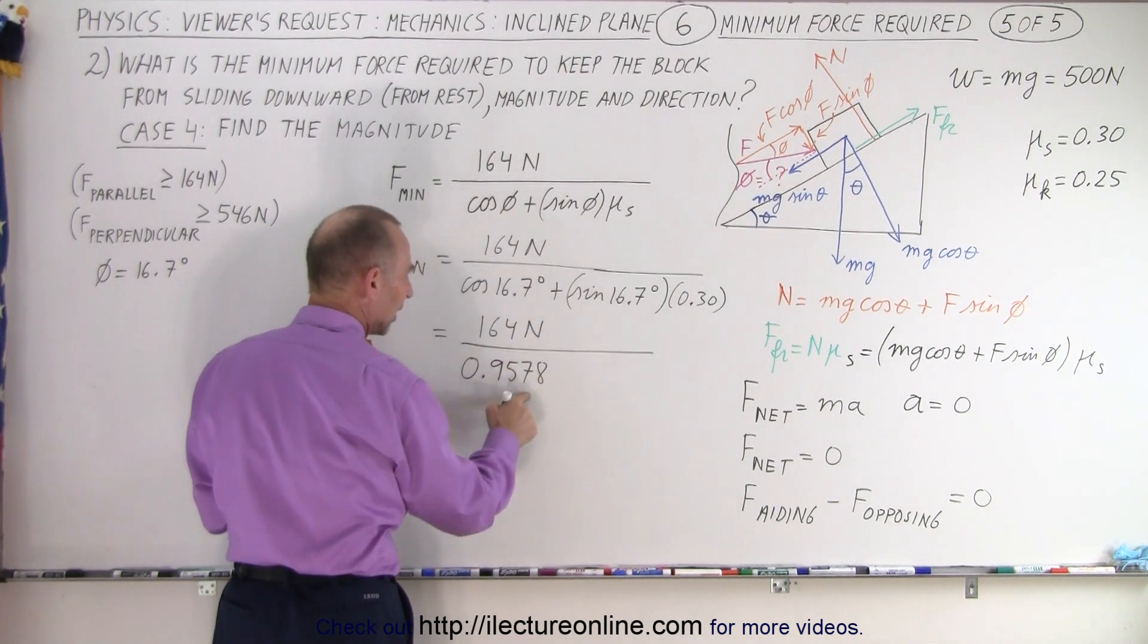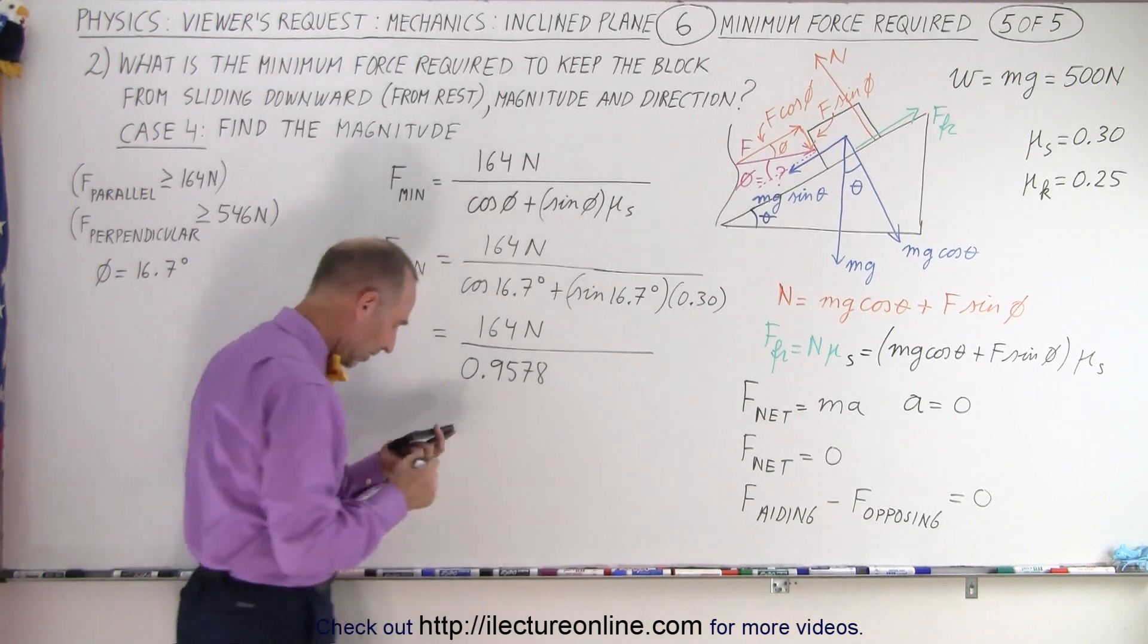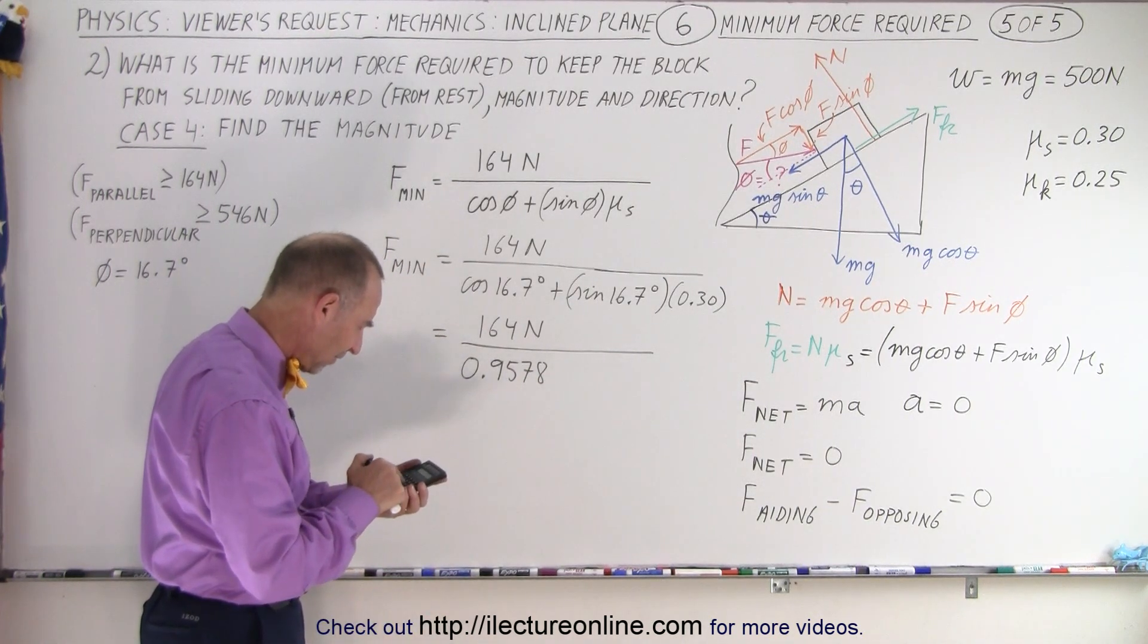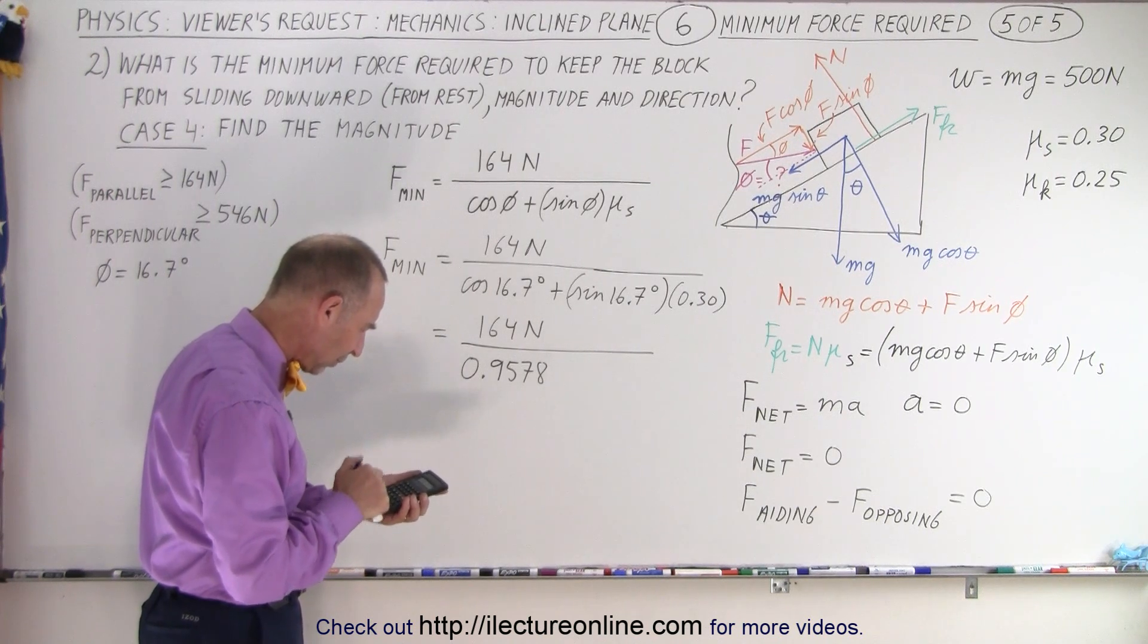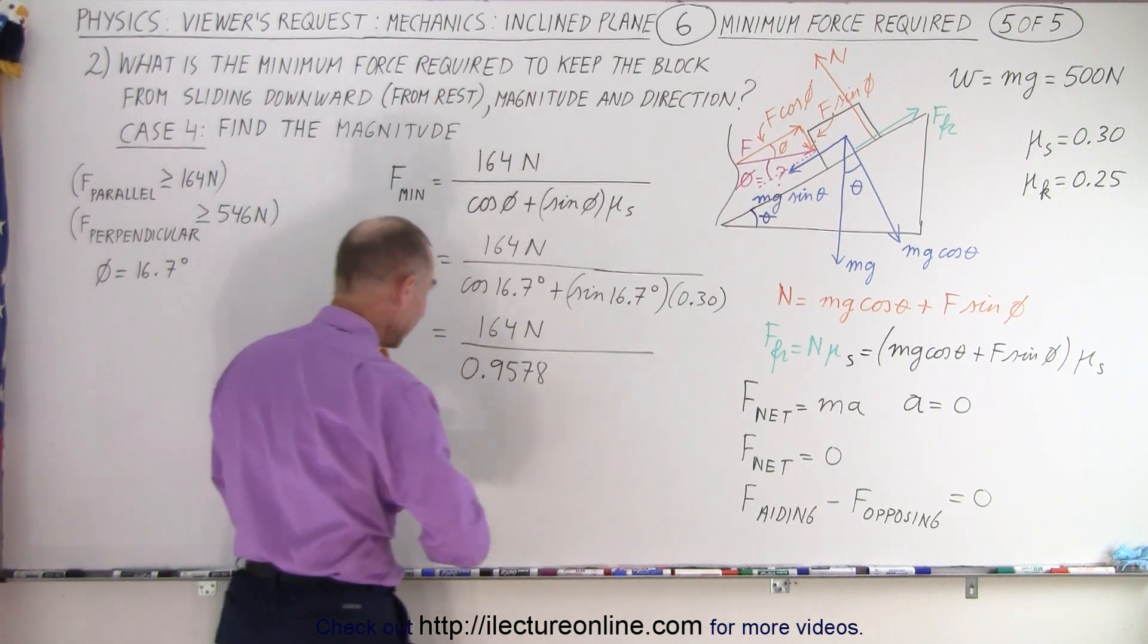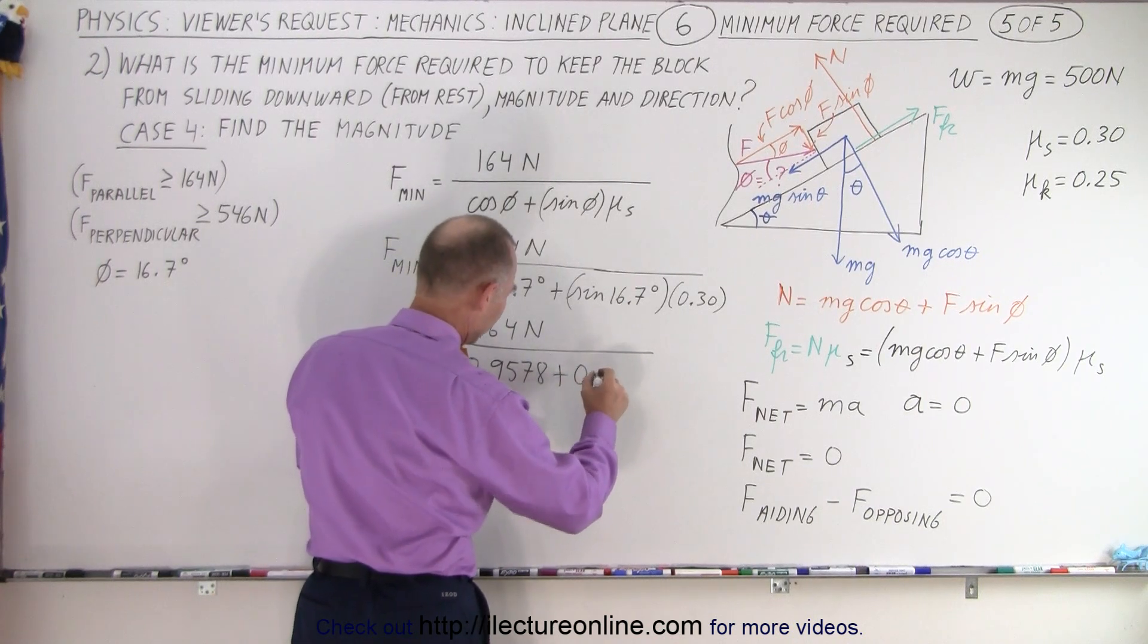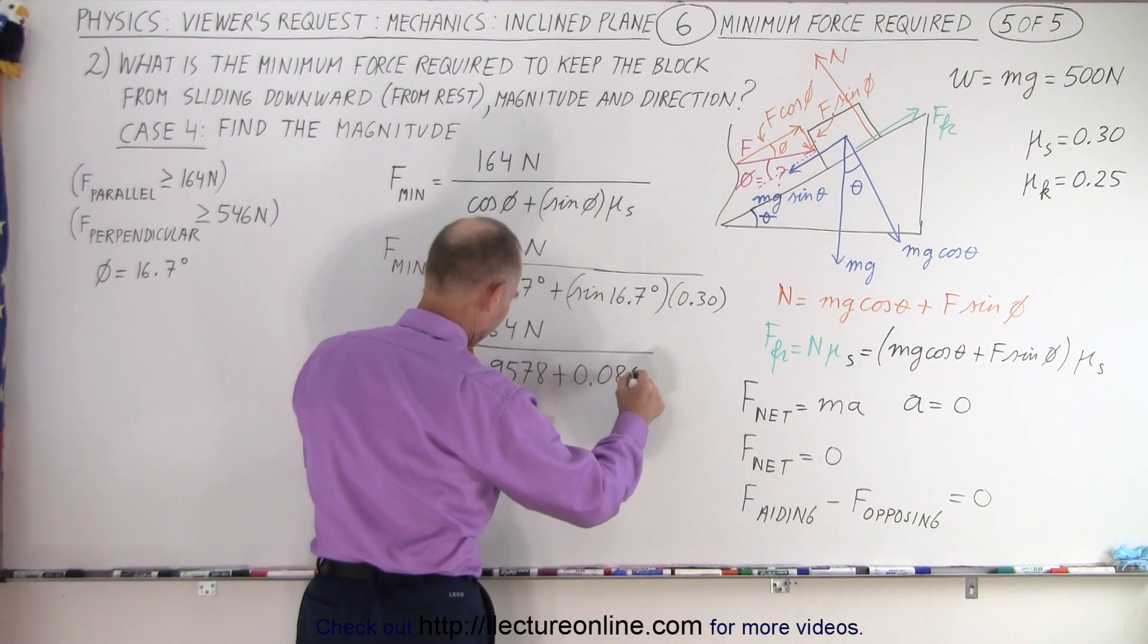which means that this must be greater than the difference between 1 and this. So let's see if that's the case. So we take 16.7, take the sine of that, times 0.3, and we end up with plus 0.0862.